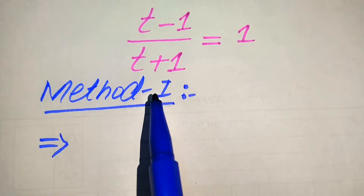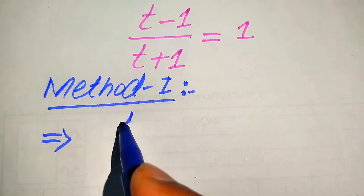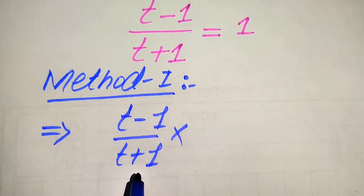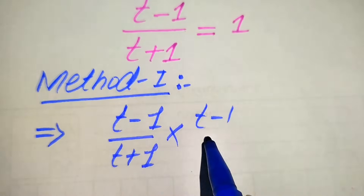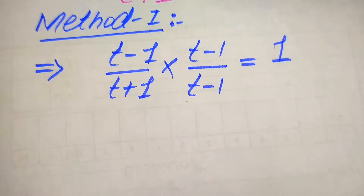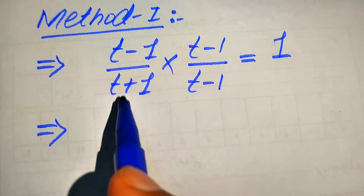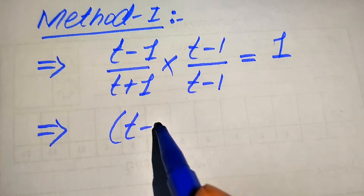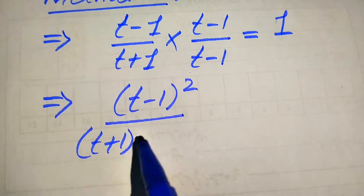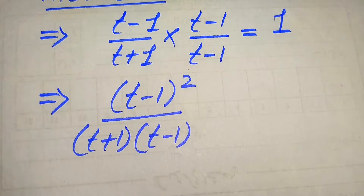In the first method, to find the value of t we rationalize the left-hand side. To rationalize the term, we change the sign of the denominator and multiply and divide by it. So we get (t - 1) / (t - 1), making the left side (t - 1) multiplied by (t - 1) in the numerator, divided by (t + 1)(t - 1) in the denominator, all equal to 1.